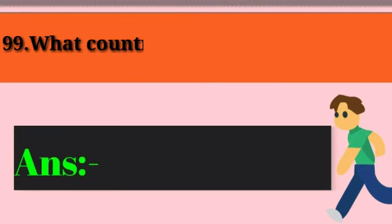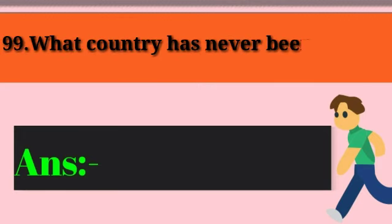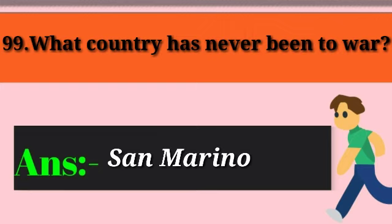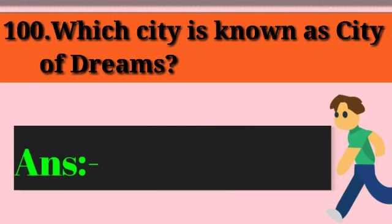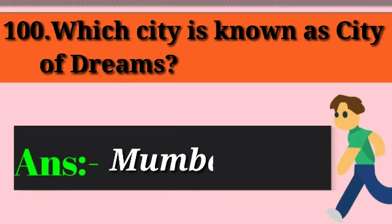Question 97: Which is the largest coffee-producing country in the world? Answer: Brazil. Question 98: Which country has no police and army? Answer: Costa Rica. Question 99: Which country has never been to war? Answer: San Marino. Question 100: Which city is known as the city of dreams? Answer: Mumbai.